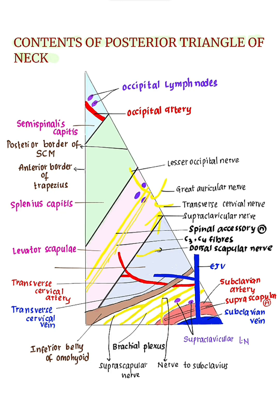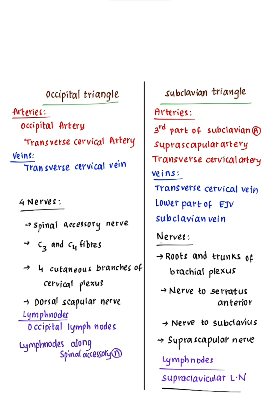From the roots C5, C6, and C7, the long thoracic nerve arises. It is also known as the nerve to serratus anterior.